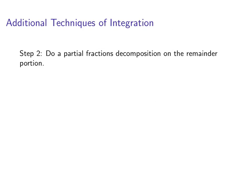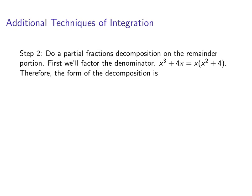Okay, so now let's do a partial fractions decomposition on the remainder. So we have to factor the denominator. So that denominator is x^3 + 4x, which turns into x times (x^2 + 4). Therefore, the form of the decomposition is 3x^2 + 3x + 8 over x(x^2 + 4) equals A over x plus Bx + C over x^2 + 4.